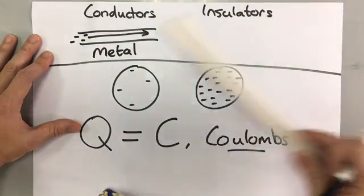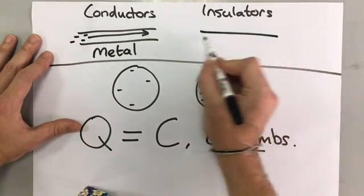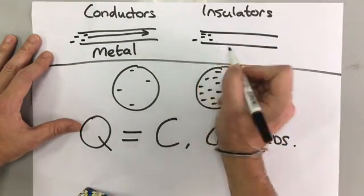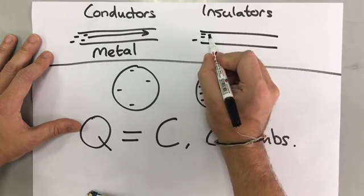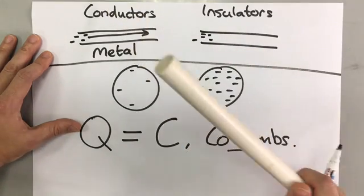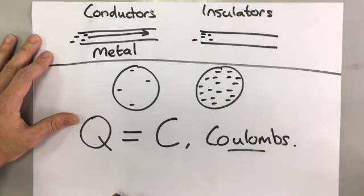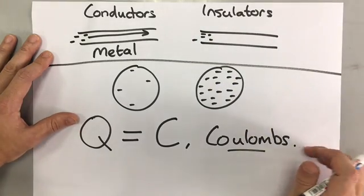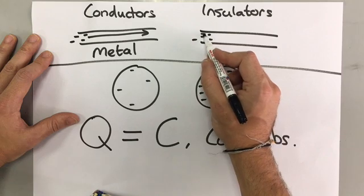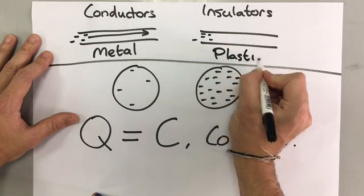An insulator, like this plastic rod, is a material where the electrons cannot move freely — they are held in place. So an insulator does not conduct electricity; charge cannot move through it. An example of that is plastic.